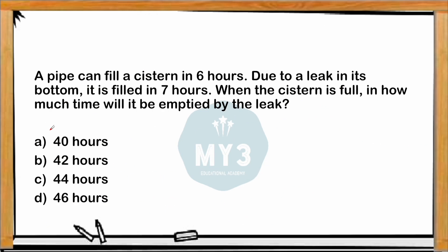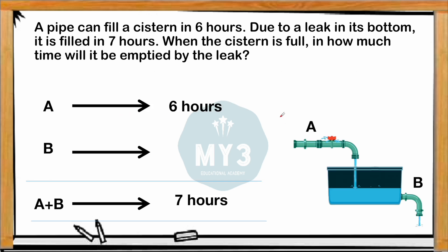Question 2: A pipe can fill a cistern in 6 hours. Due to leakage at the bottom, it is filled in 7 hours. When the cistern is full, in how much time will the leakage empty it? If only pipe A works it fills the tank in 6 hours. With leakage occurring simultaneously it takes 7 hours — more time because leakage is happening. Taking the LCM of 6 and 7, which is 42, I assume total tank capacity is 42 liters.